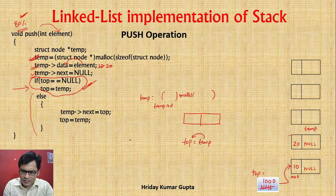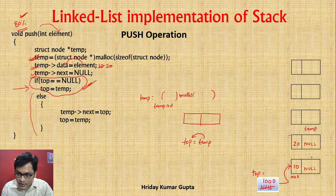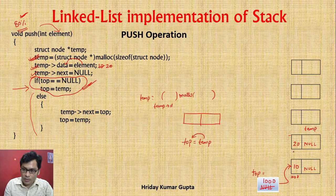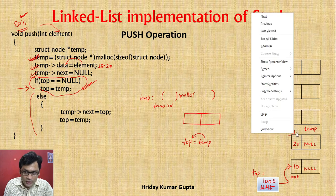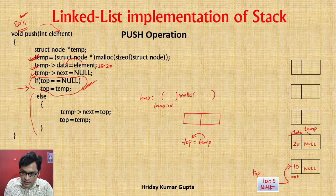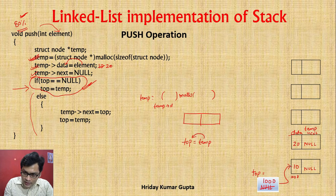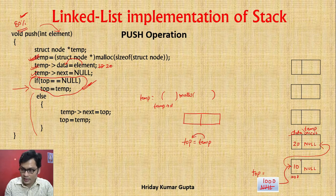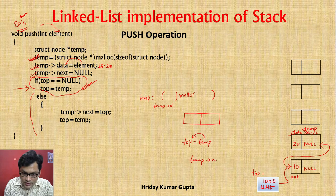Now we go to the else part. In the else part — temp's next: what do we do? We will assign the top value to temp's next. So temp next equals top — we assign the top value here. It means that top is at address 1000, and we assign 1000 into temp's next.